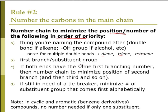You want to minimize the number for the first branch or substituent group. If both ends have the same first branching number, minimize the position of the second branch. If still a tiebreaker, minimize the number of the substituent group that comes first alphabetically. In cyclic and aromatic compounds, no numbers are needed if there's only one substituent.